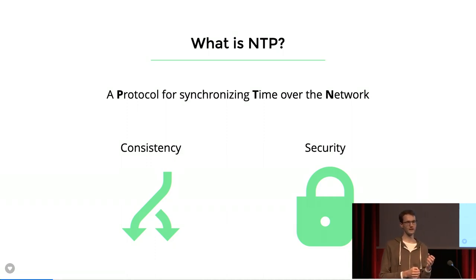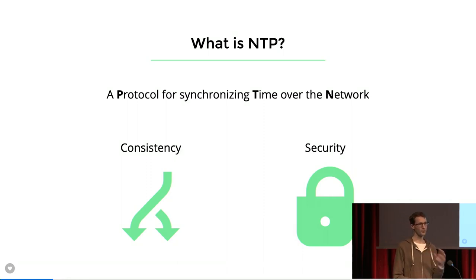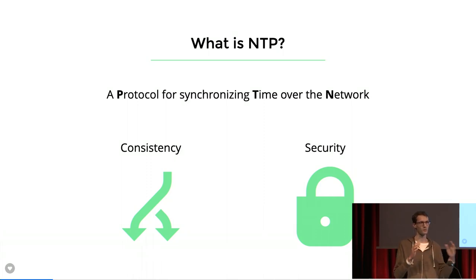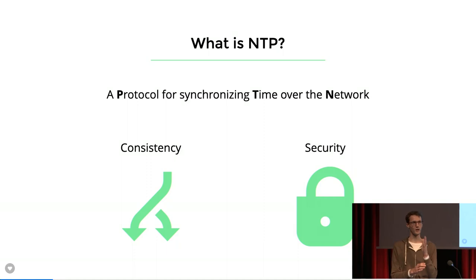The clocks in our devices are sort of okay — they have to be cheap and compact and light, so they aren't perfectly precise, and they will drift over time. How much they drift per hour fluctuates based on, say, temperature. So to keep things perfectly synchronized, as synchronized as they need to be, they need to be continually updated. And that's what we do using NTP.